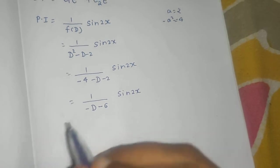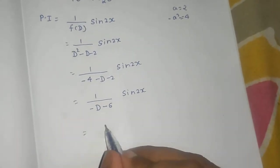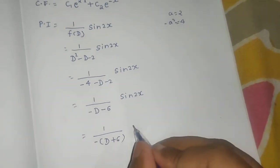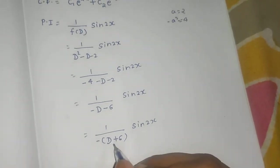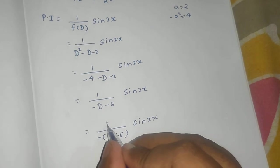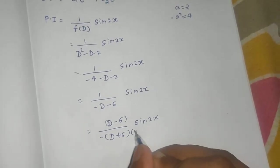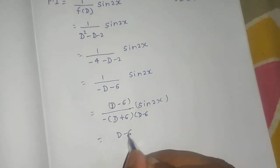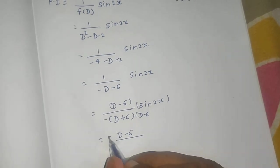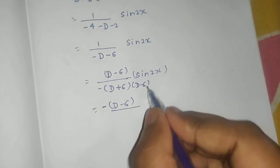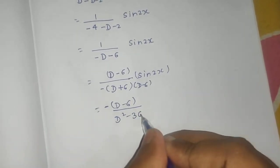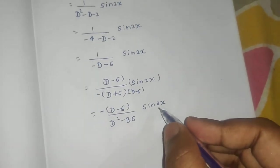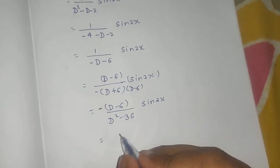We need a D² term again to apply the rule, so we take out a minus sign from the denominator to get 1/(D + 6) operating on sin(2x). To create a difference of squares, we multiply numerator and denominator by (D - 6), giving (D - 6)/(D² - 36) operating on sin(2x).